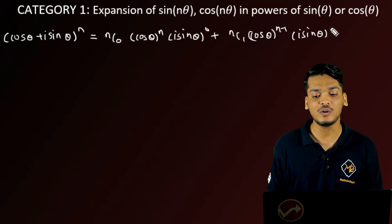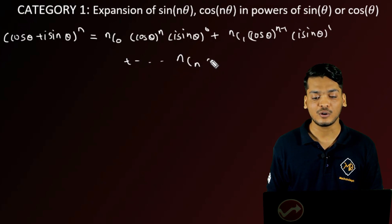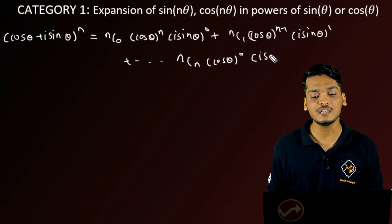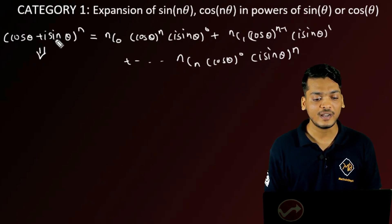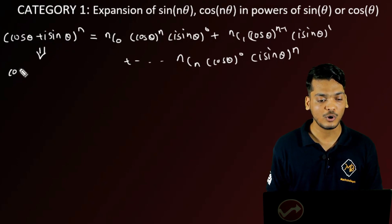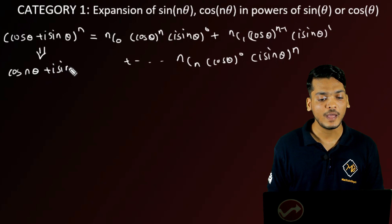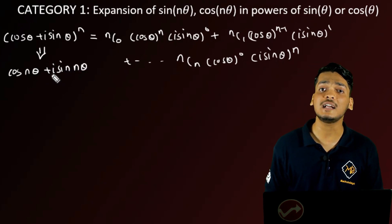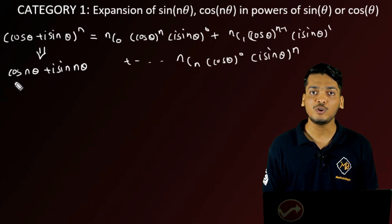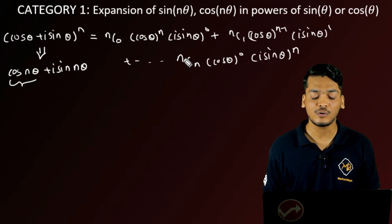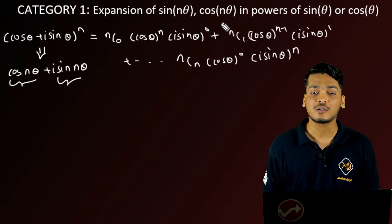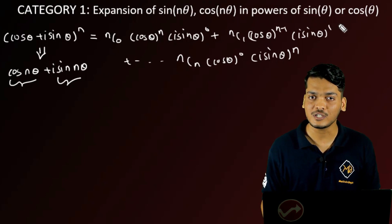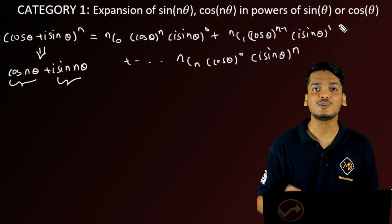...up to nCn·cos^0(θ)·(i·sinθ)^n. Then we use De Moivre's theorem to write (cosθ + i·sinθ)^n as cos(nθ) + i·sin(nθ). Then we compare and equate the real and imaginary parts of the right-hand side and left-hand side, which gives us the expansion of cos(nθ) and sin(nθ) in terms of sinθ and cosθ. This was the basic concept, also discussed in the theory part. So let's see the first question of category 1.